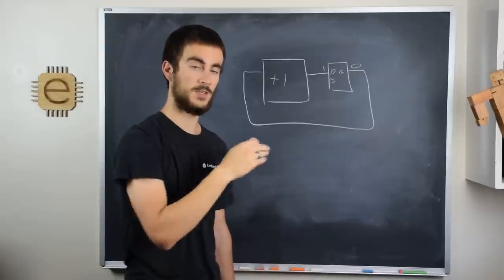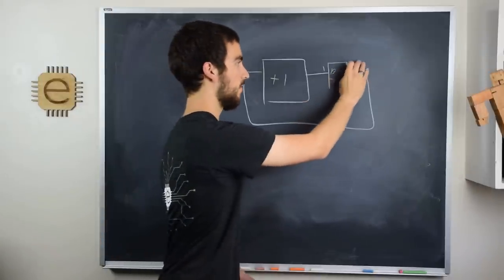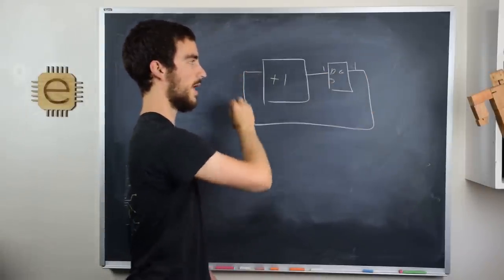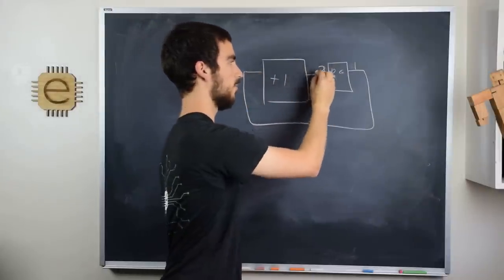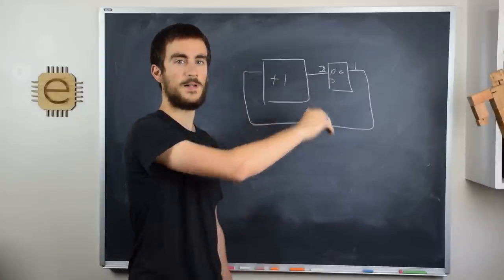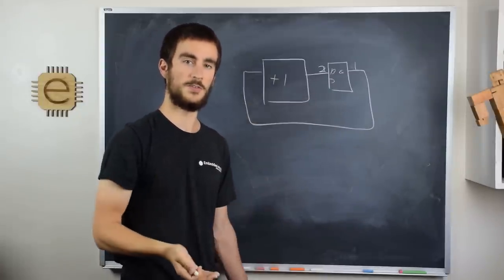Now on the next clock cycle, on the next rising edge, the output of the flip-flop will then become the input, so this will be 1, the 1 will propagate around, and then the input will become 2. So each rising edge of the clock will cause the output of the flip-flop to increase by 1. So we have effectively made our counter.